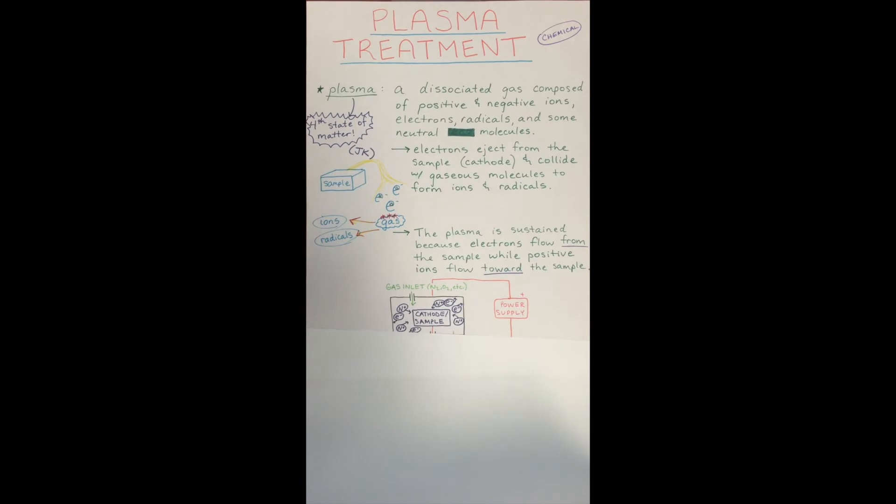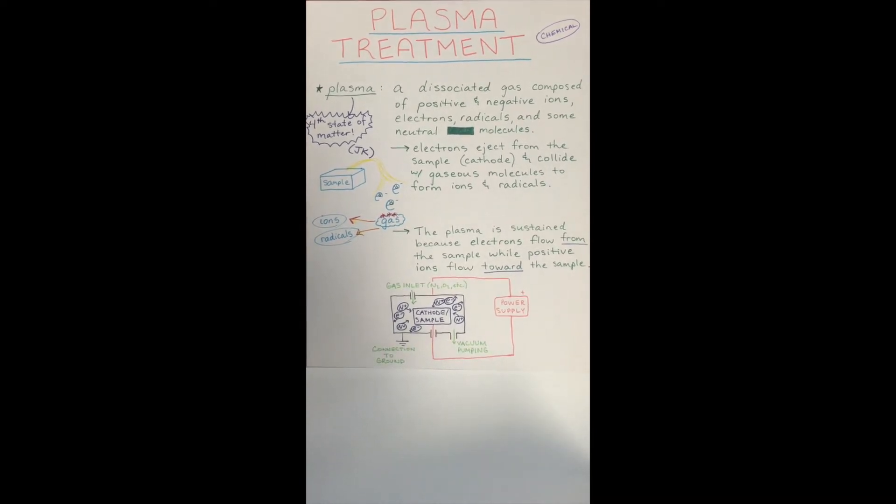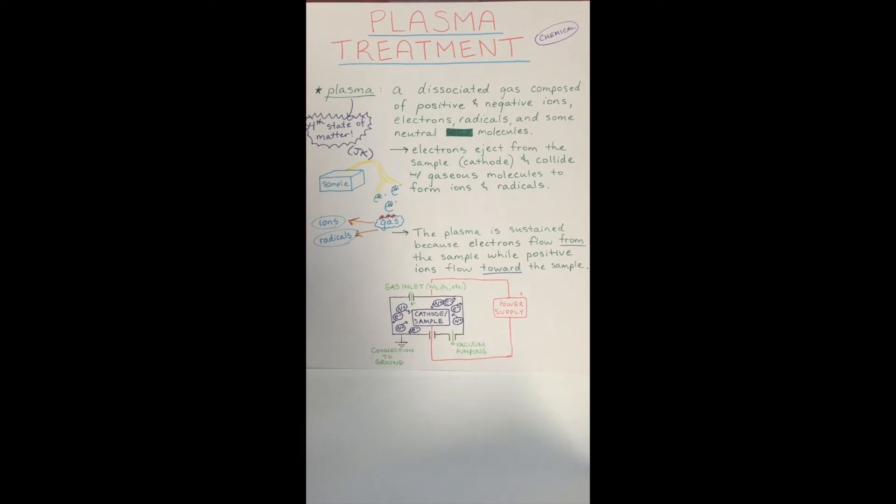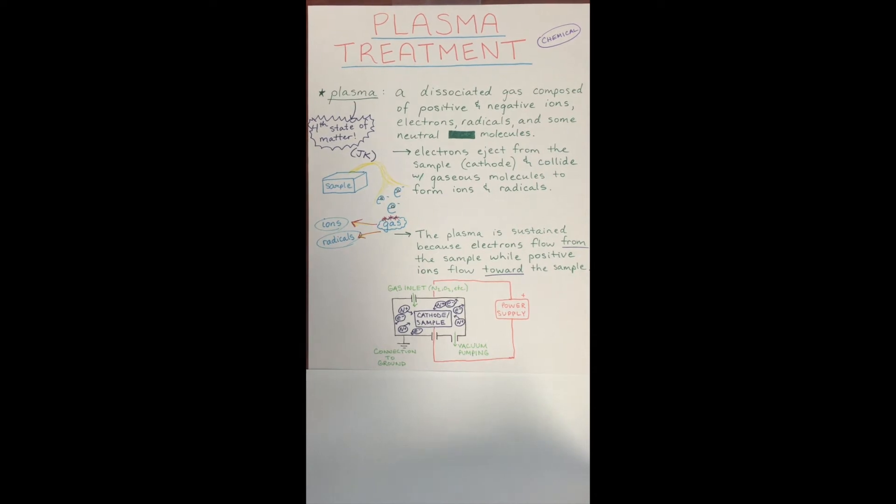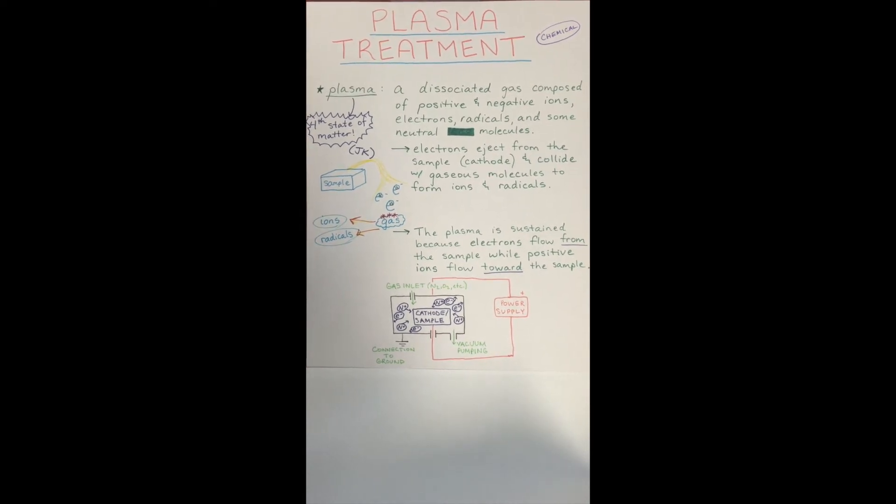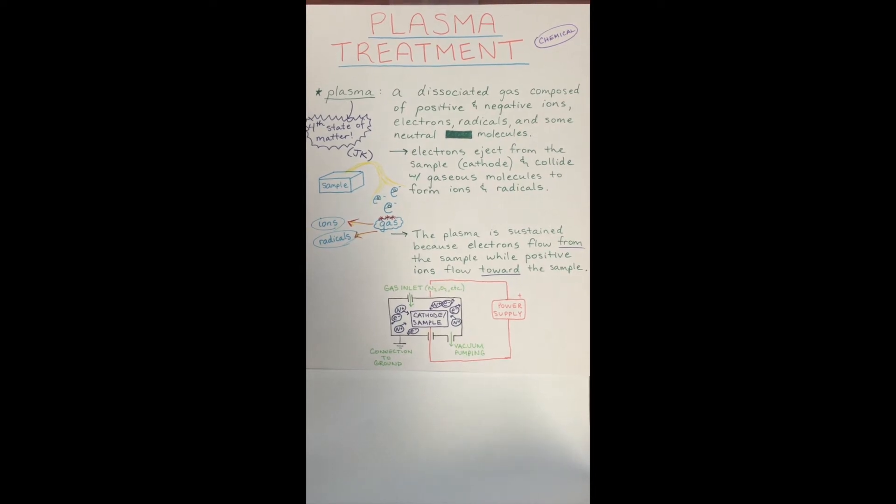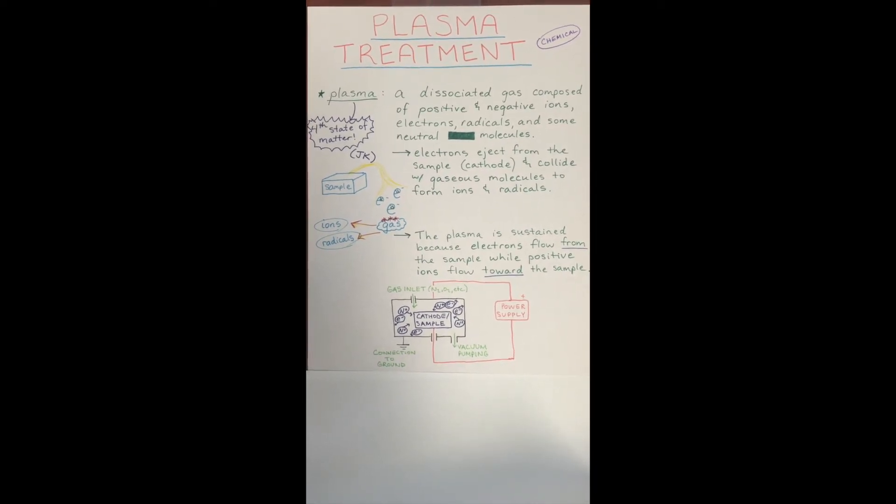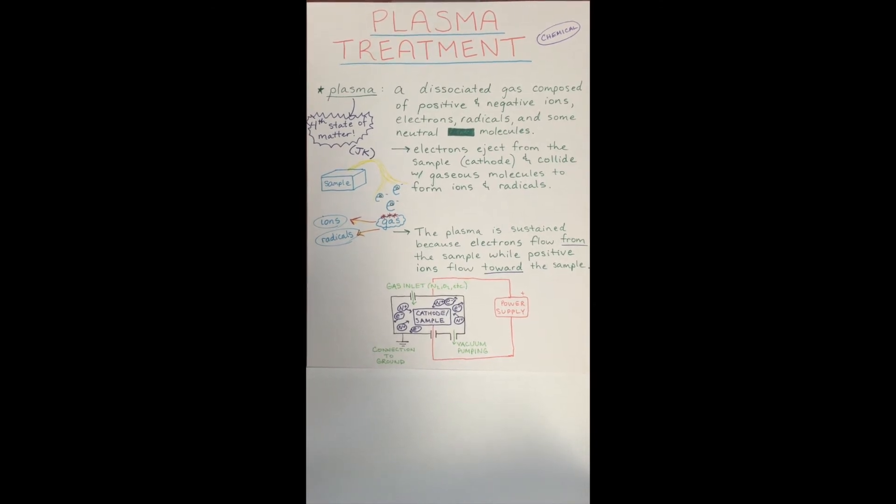The chamber that holds the sample is connected to a gas inlet. A power supply connects the anode to the cathode. The sample is the cathode. The electrons from the cathode bombard the plasma gas to yield the ions and radicals. These ions and radicals are used to react with the sample's surface. The process continues as electrons still flow from the sample and positive ions continue to flow to the sample.